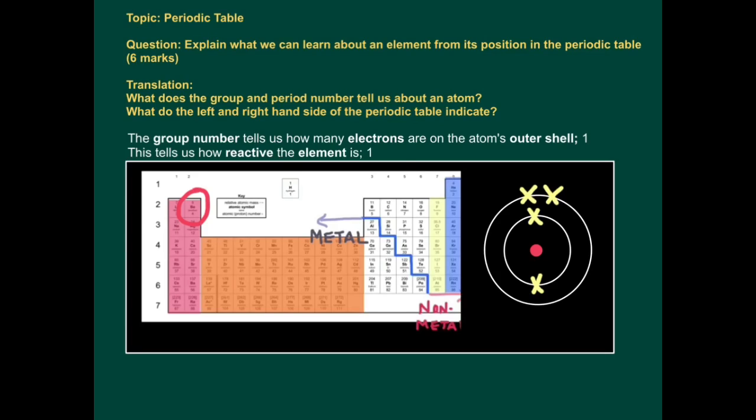Remember, the closer an atom is to becoming stable, having a complete outer shell, the more reactive it is. So beryllium just needs to get rid of two electrons and it will have a complete outer shell and become stable. So it's a very reactive element.